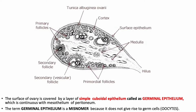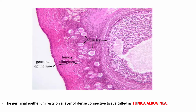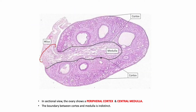The surface of the ovaries is covered by a single layer of simple cuboidal epithelium called the germinal epithelium, which is a misnomer as it does not give rise to germ cells. This surface epithelium is continuous with the mesothelium of the peritoneum. Underneath the germinal epithelium, there is a layer of dense connective tissue called the tunica albuginea.